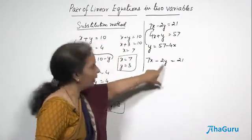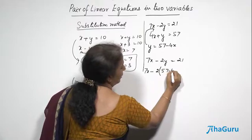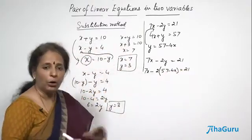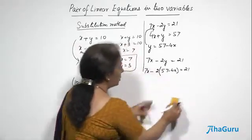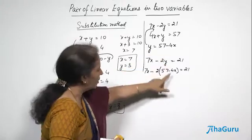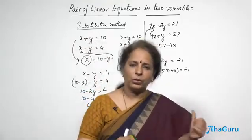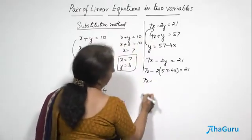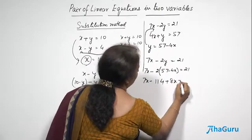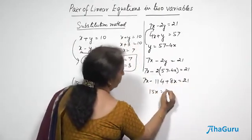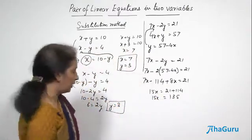The first equation is 7x minus 2y equals 21. Substituting y equals 57 minus 4x, we write: 7x minus 2 times (57 minus 4x) equals 21. Be careful to multiply 2 by the entire bracket. This gives 7x minus 114 plus 8x equals 21, so 15x equals 21 plus 114, which is 135. Therefore x equals 135 divided by 15, giving x equals 9.